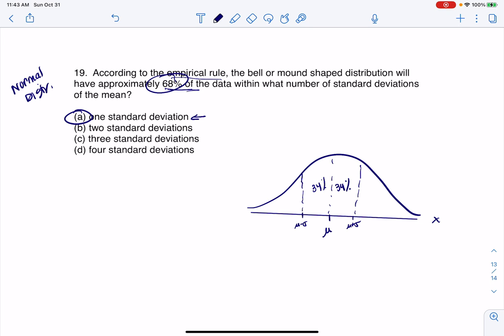68% of observations are within one deviation of the mean. If you wanted to figure out, if you thought the answer might have been 2, let me just reframe this for you. If it was 2, this wouldn't have said 68.